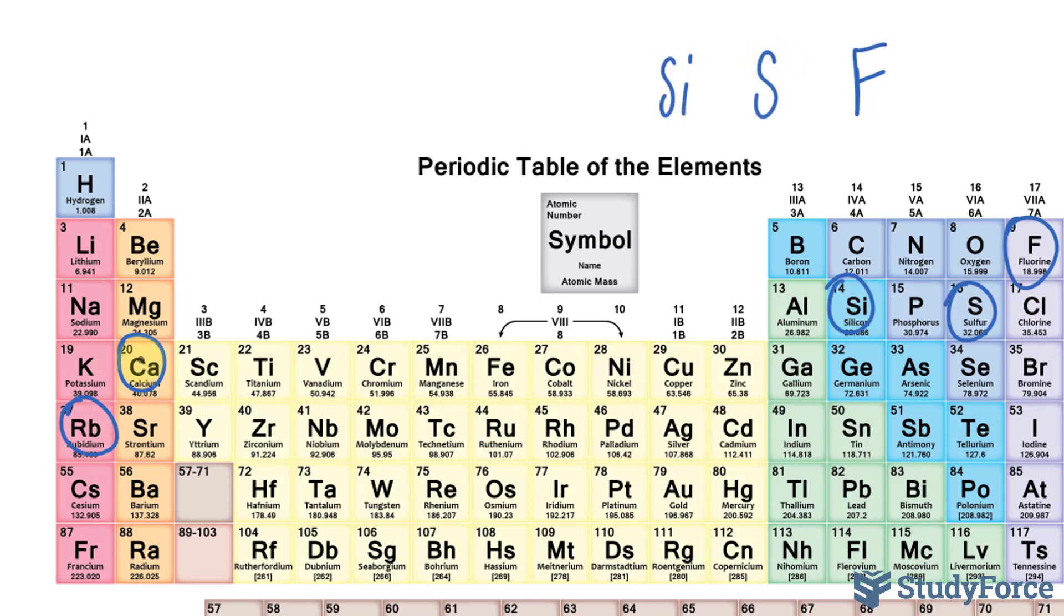And between these two, we can assume that calcium is the smaller of the two because rubidium is at a higher principal quantum number. So we go from Rb to calcium to silicon, sulfur, then fluorine.